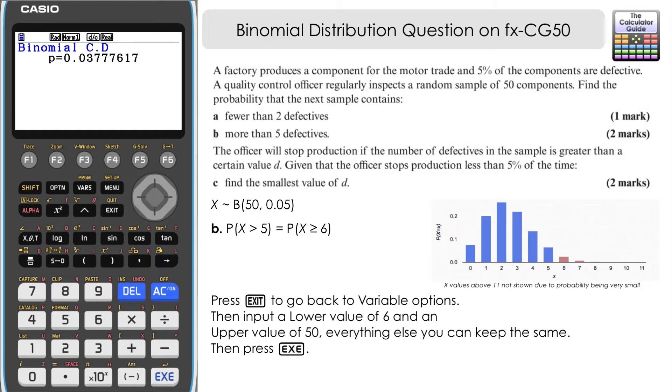Okay, let's have a look at the last part of the question. The officer will stop production if the number of defectives in the sample is greater than a certain value, D. Given that the officer stops production less than 5% of the time, find the smallest value of D.